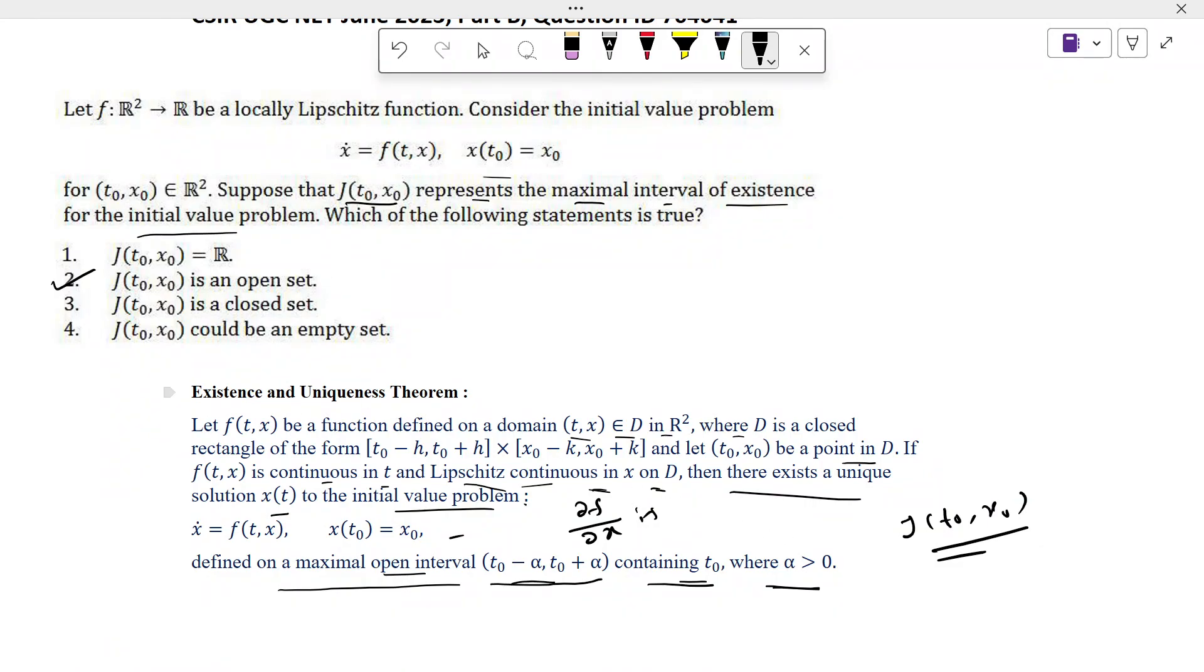Option 4 should be false because we get an open interval surrounding (t0, x0), so it can't be empty. For options 1 and 3 we take an example.